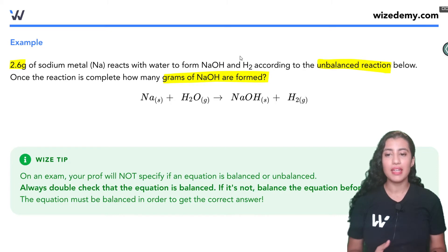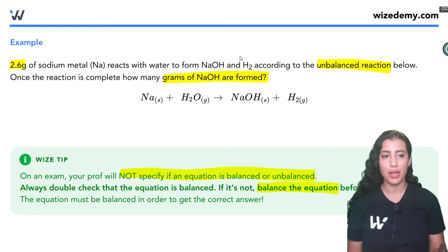So my tip here is that on your exam your prof will not specify if an equation is balanced or unbalanced. They're not going to tell you this is an unbalanced reaction. So any time you see a chemical reaction on your exam or even in your homework, I want you guys to get into the habit of checking if it's balanced. So double check if it's balanced. If not, you have to balance it because we need to take into consideration the stoichiometric coefficients. And if we don't balance it, we're going to get the wrong answers for these stoichiometry problems. Okay, so the first thing is always to balance it.